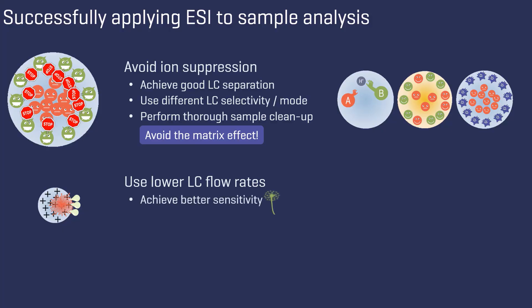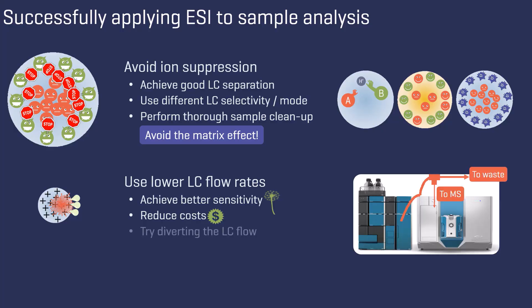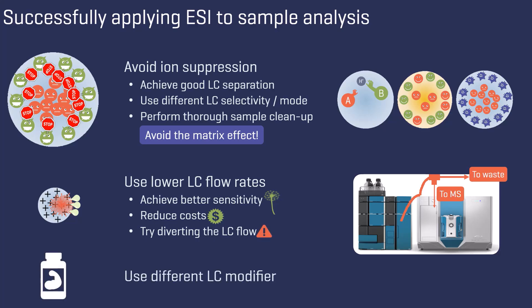Lower flow rates generate smaller electrospray droplets while also decreasing the volume of expensive LC-MS grade solvents and minimizing costly waste. Some users partly divert the LC flow before it enters the mass spectrometer, with the risk of reduced reproducibility. LC modifiers can also make a difference.